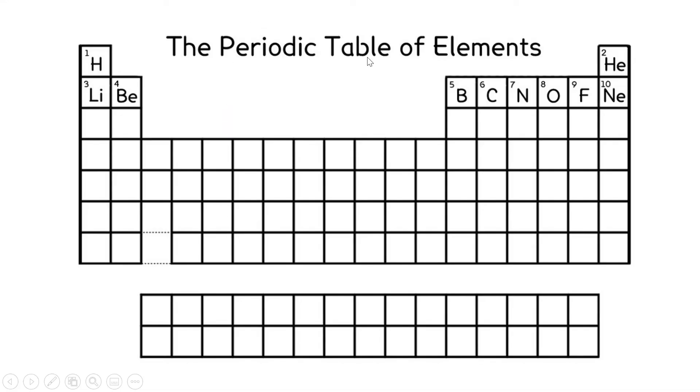The periodic table of elements. So these are the ones we covered: one, two, three, four, five, six, seven, eight, nine. See if you can name all of them. Pause it. See if you can remember what this one is.